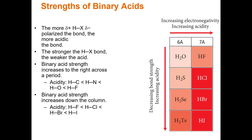When we look at the halogen acids — HF, HCl, HBr, and HI — they generally become more acidic as we go down the column. HF is the weakest acid and HI is the strongest acid.